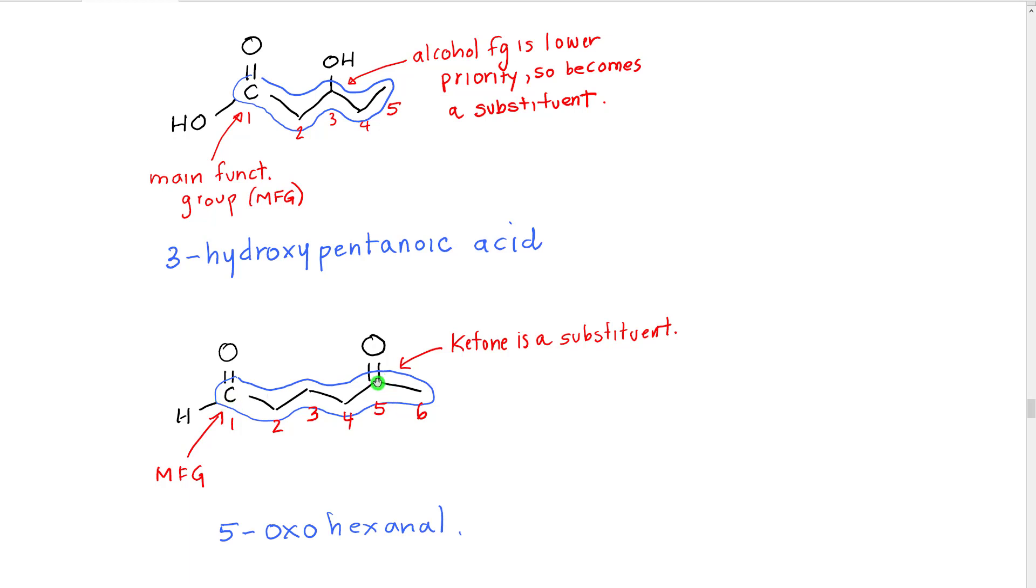Then for the ketone, what we do is we find the number of the carbon of the carbonyl, in other words the C double bond O carbon, of the ketone that we're treating as a substituent. So in this case, that would be carbon 5 right here. So we use that number plus the prefix oxo to indicate that we have this C double bond O oxo group at carbon 5.